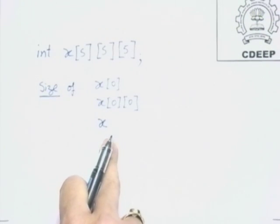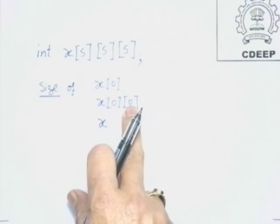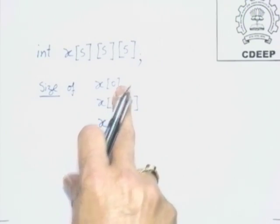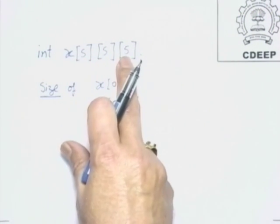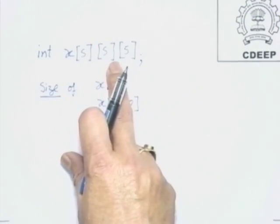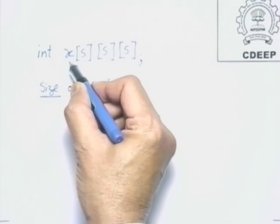The correct answer is that there is no meaningful notion of size of x, size of x[0][0], or size of x[0] in the strict technical sense. When we declare an array of this type, we are declaring a collection of several integer values — to be precise, 5 times 5 times 5 equals 125 integer values. The size is associated with a data value stored inside the computer. Logically, the size of the array x is a collection of 125 integer values.